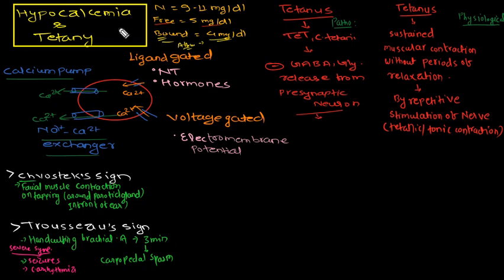Hypocalcemia is the reduced level of calcium below 8.5 or more severely below 7.5 mg per deciliter, which gives several manifestations, among which the major one is tetany. We have normal calcium levels from 9 to 11 mg per deciliter. Among all calcium, we have free ionized calcium which is biologically active at around 5 mg per deciliter, whereas bound calcium is bound with albumin at around 4 mg per deciliter. So what causes hypocalcemia?